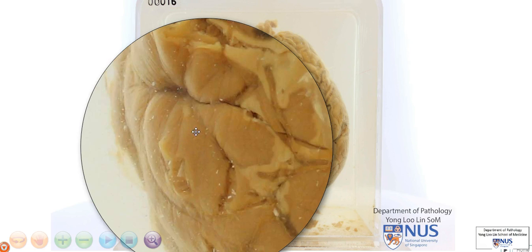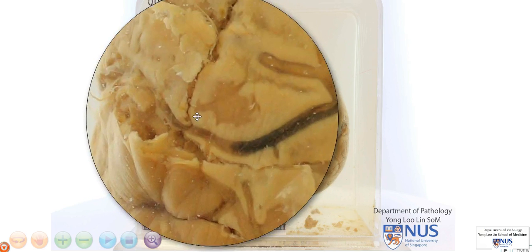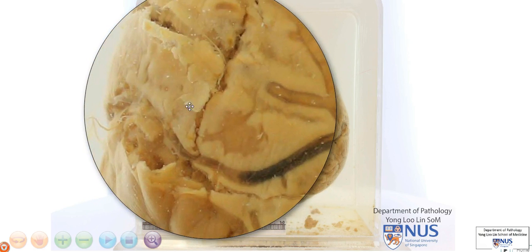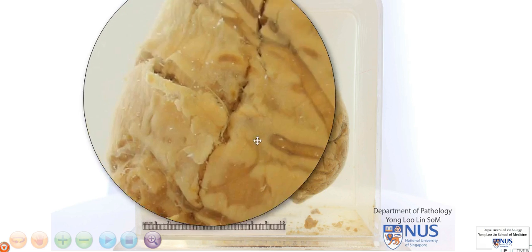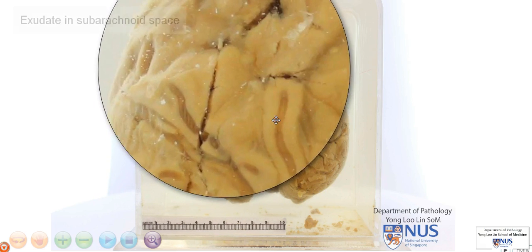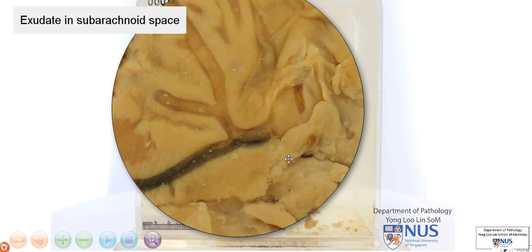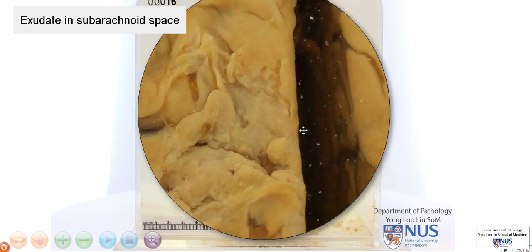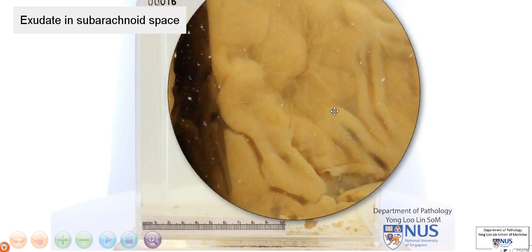We are first looking at the arachnoid mater, and this is transparent normally, like a film of cling wrap. And just below that is the pia mater. However, if you look at this area, you can see that there's this pale tan exudate within the subarachnoid space, that is between the arachnoid and pia mater. And all these are areas of exudate.